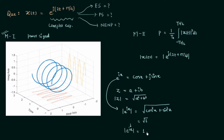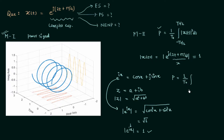Comparing e^(j(2t + π/4)) with e^(jx), we have x = 2t + π/4, but since the modulus is always 1 regardless of x, we get |x(t)| = 1. Therefore |x(t)|² = 1. Now we can calculate the average power: P = (1/T₀) times the integral from −T₀/2 to T₀/2 of 1 dt. The integration of 1 gives t, and we apply the limits.